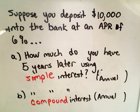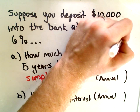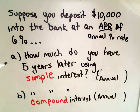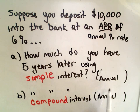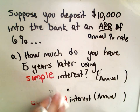Suppose you walk into the bank with $10,000 and you get an APR, or annual percentage rate, of 6%. Let's look at how much you would have five years later if you get simple interest that accrues annually, and also what's called compound interest that also accrues annually. Let's look at the difference between the two.